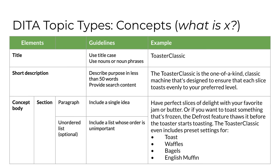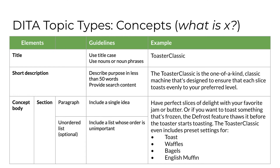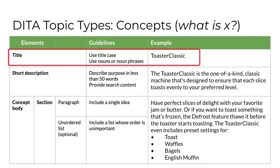The second basic topic type in DITA is a concept. Jorcik tells their content creators that concept topics should communicate in a clear, concise, precise, and complete way the essential information for understanding a concept. They answer the question 'What is?' In DITA, all concept topics have a title, a short description, and a concept body made up of sections, which are made up of paragraphs and perhaps other elements like lists. The guidelines for creating a short description are the same for tasks and concepts, but the title for a concept topic must use nouns — like 'Toaster Classic' — instead of gerunds.